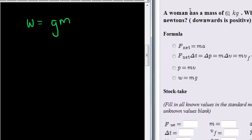Now, we are given the mass, so we know the gravitational constant for a woman on earth would be 9.8. They tell us that downwards is positive, which means it's positive 9.8, and then her mass is 61 kilograms.